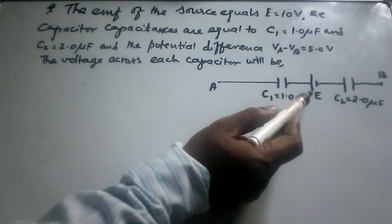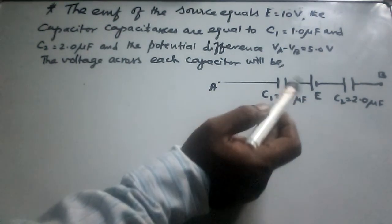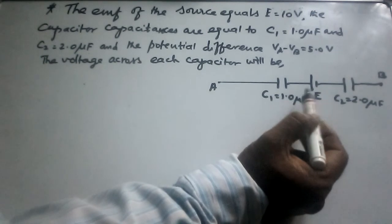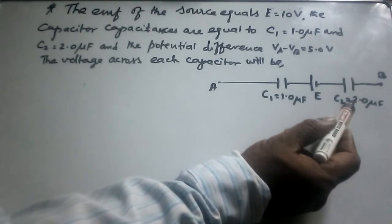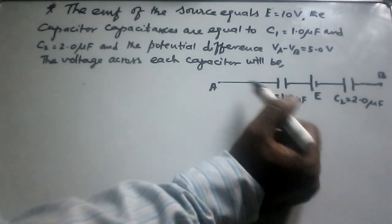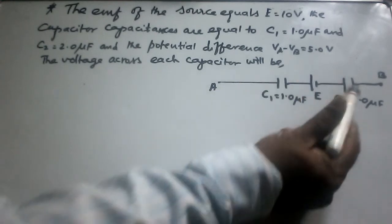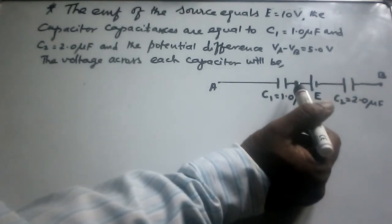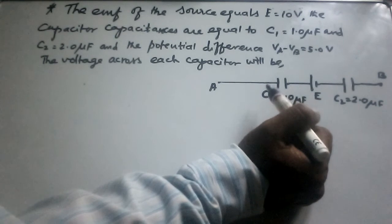The EMF of the source equals 10V. The capacitor capacitances are C1 equal to 1.0 mF and C2 equal to 2.0 mF, and the potential difference VA minus VB equals 5.0V. We have to find the voltage across each capacitor.